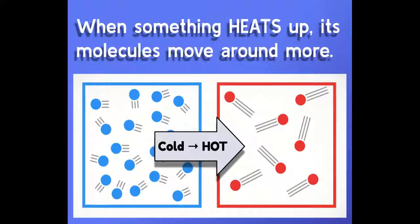When something heats up, its molecules move around more. Now these circles, they represent molecules, and on the left they're cold, they're not moving around very much, and on the right they've been heated up, so they're bouncing around all over the place.